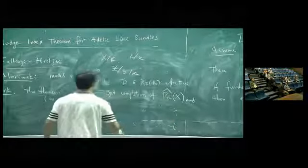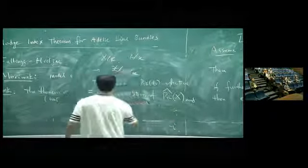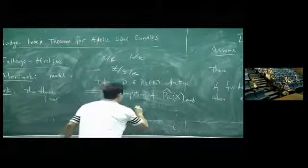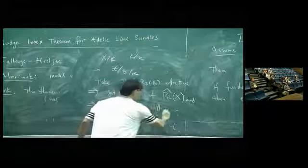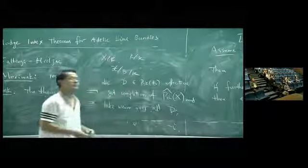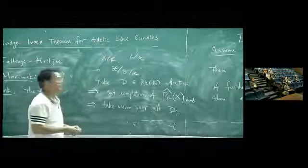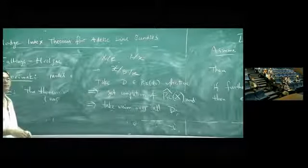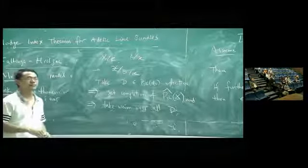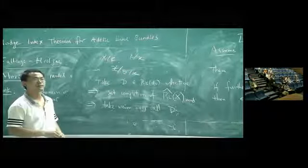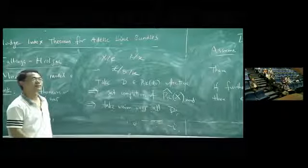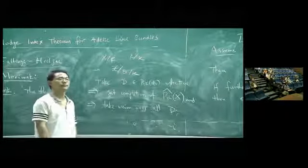Now then, take union over all b. But in the number field case, I suppose that you allow yourself to not work with a fixed divisor, but to make some...